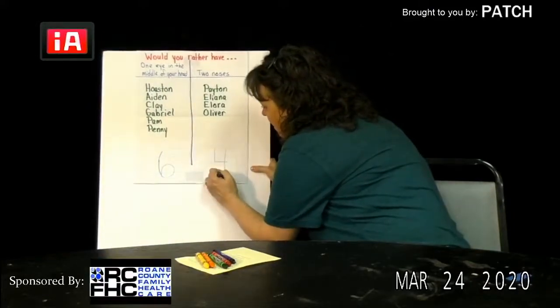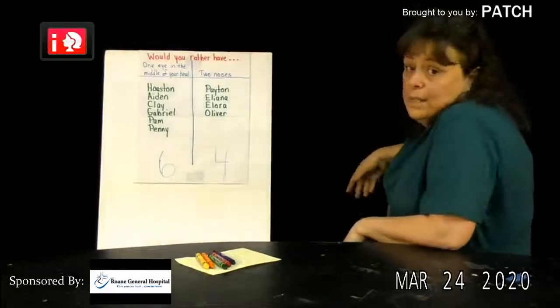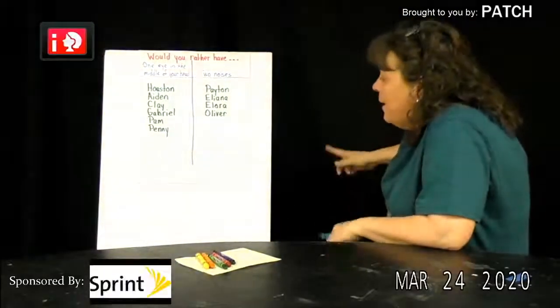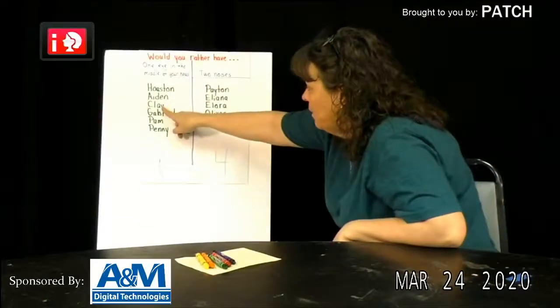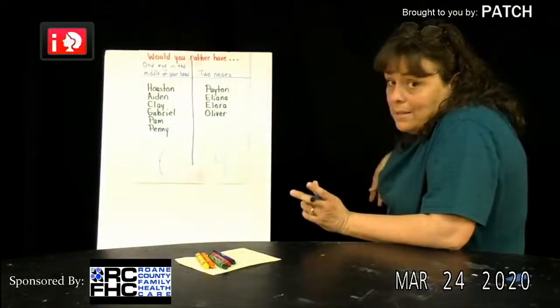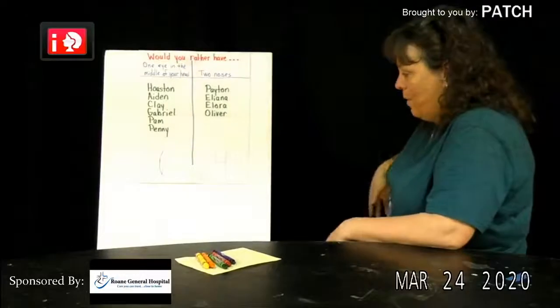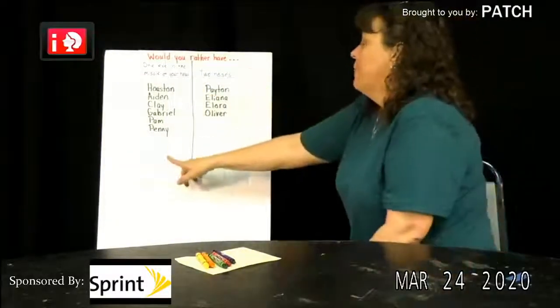All right, so then the next part of this is I always ask someone, looking at our two lists, which one has the most? Is it one eye in the middle of your head, or was it the two noses? You want to guess? It was the one eye in the middle of your head. It had the most. So the big number is first.